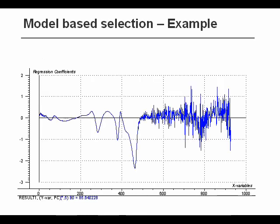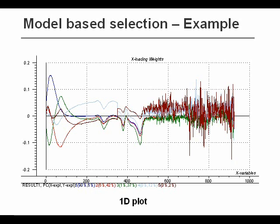If we look at the regression coefficients of the five-component model we saw initially, we can see that there are parts of the spectrum where we have very noisy regression coefficients — the rightmost part here. That indicates that this area is probably not helping the model very much with predictions, so that could lead us to exclude those variables and try to build a model without them. If we look at the loadings, we basically get the same indication. The five different loadings from a PLS model of the full spectrum tells us that the rightmost part is very, very noisy.